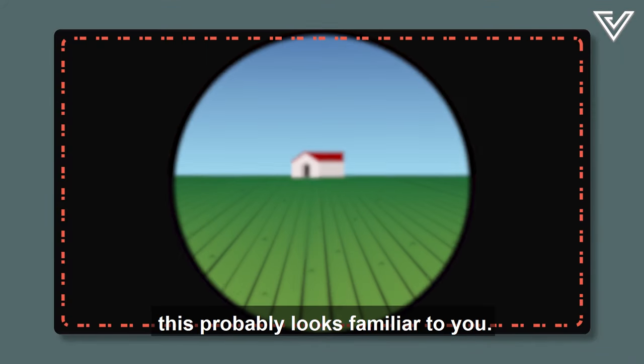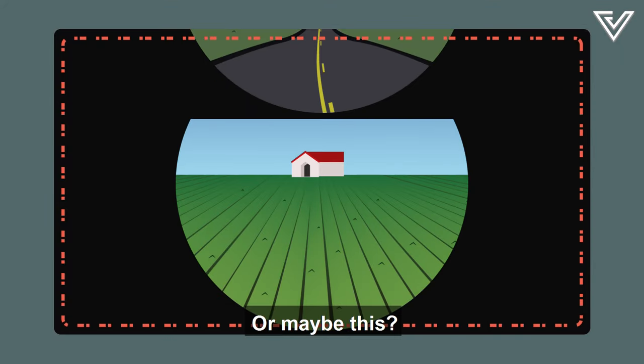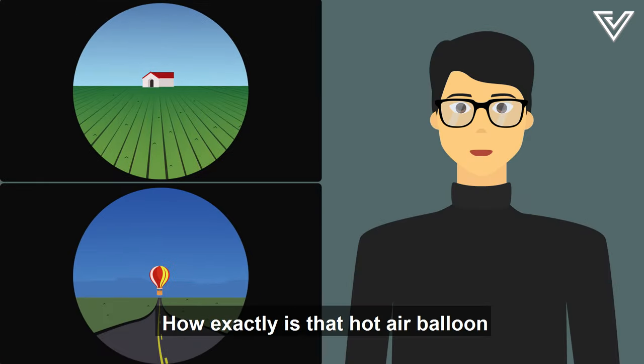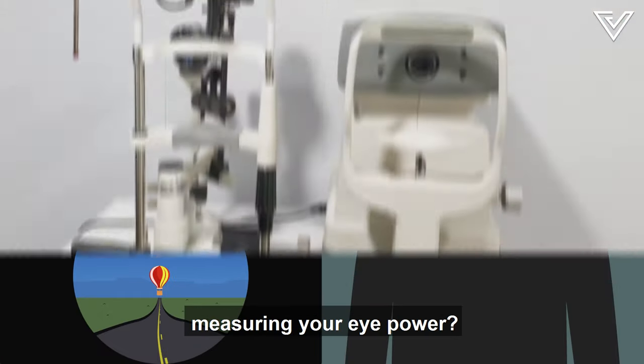If you wear glasses, this probably looks familiar to you. Or maybe this? It looks like it's really far away, and it starts off blurry. How exactly is that hot air balloon measuring your eye power?